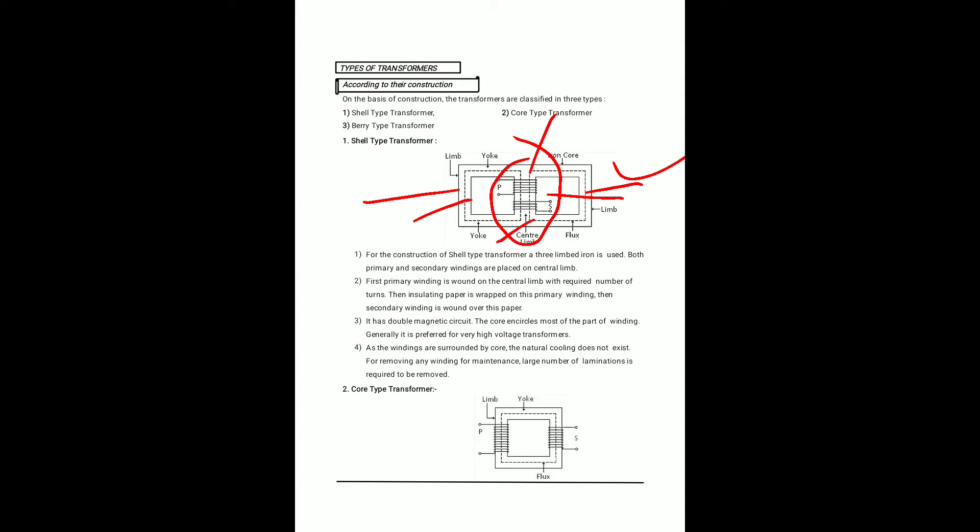In the shell type, the primary winding is wound on the central limb with the required number of turns, then insulating paper is wrapped and the secondary winding is wound over it. It has a double magnetic circuit. The core encircles most of the winding and is generally preferred for very high voltage transformers. Natural cooling does not exist easily and a sandwich type winding with a large number of laminations is required.